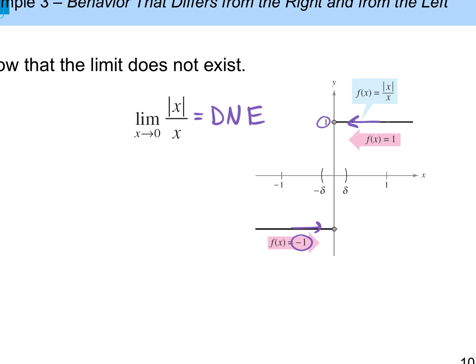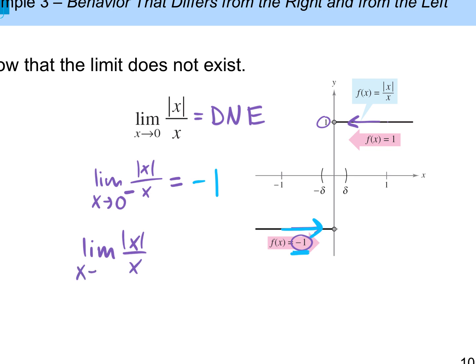We could specify a one-sided limit: the limit of |x| over x as x approaches 0 from the negative direction — that would be negative 1, since from the left our graph gets closer and closer to negative 1. Similarly, the limit of |x| over x as x approaches 0 from the positive direction — as we approach 0 from the right, our y value would be 1.